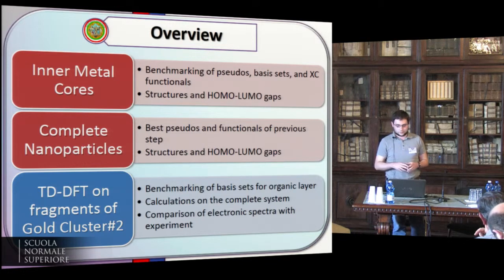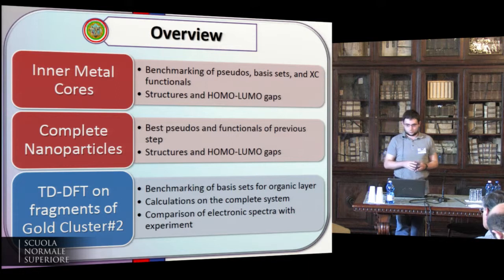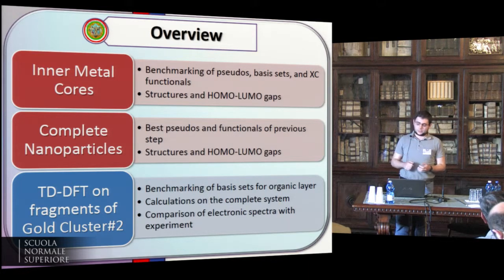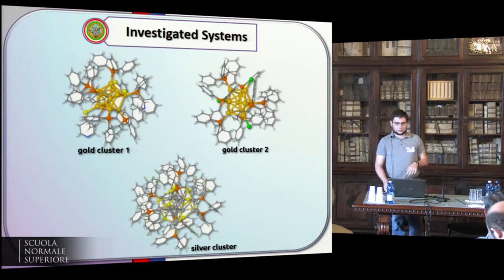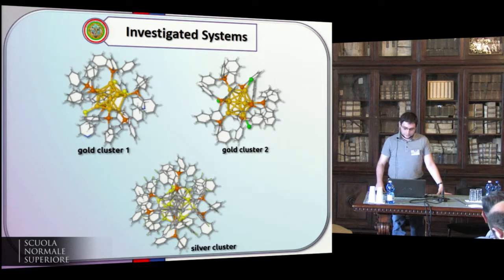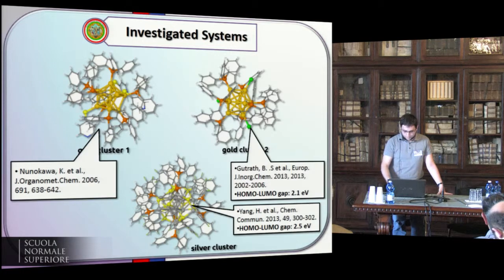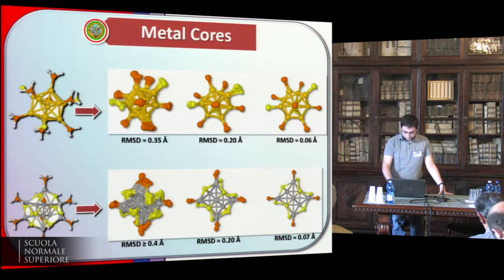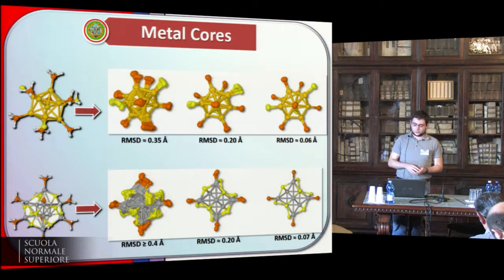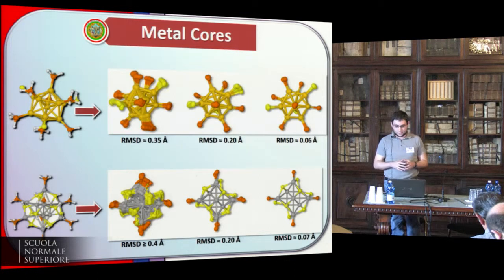We also calculated time-dependent electronic spectra of the second gold cluster, because for this gold cluster the experimental optical spectrum is available. These are the systems we have investigated. The two gold clusters are made of 11 gold atoms while the silver cluster is made of 14 silver atoms. The inner core region is represented with balls and sticks while the outer region is represented only by sticks. We assessed the quality of our calculations by computing the root-mean-square displacement of the atomic positions from our structural optimizations, all performed with the Gaussian 09 suite of programs.